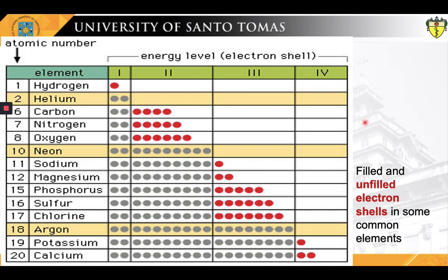Atoms, like other things governed by the laws of physics, tend to take on the lowest energy, most stable configuration they can. Thus, the electron shells of an atom are populated from the inside out, with electrons filling up the low-energy shells closer to the nucleus before moving into the higher-energy shells further out. The shell closest to the nucleus, 1n, can hold two electrons; the next shell, 2n, can hold eight; and the third shell, 3n, can hold up to 18.